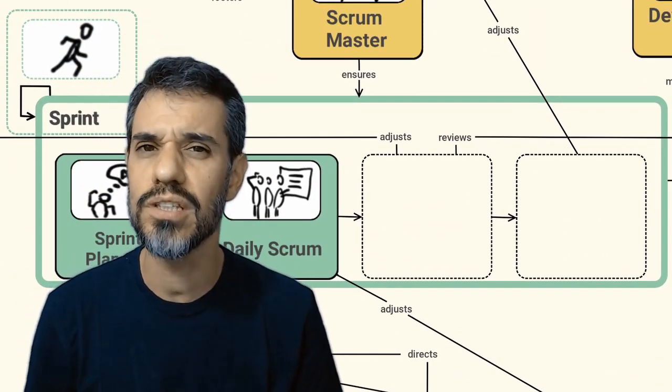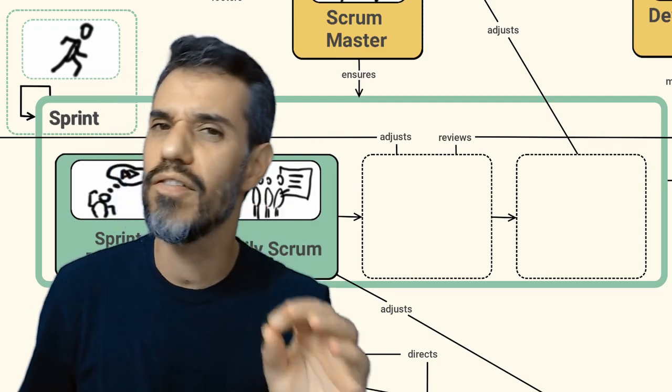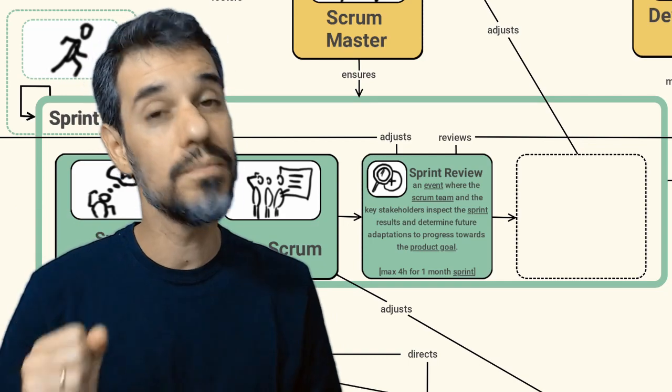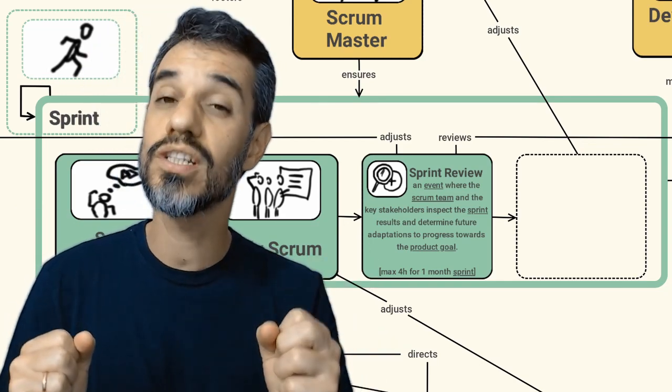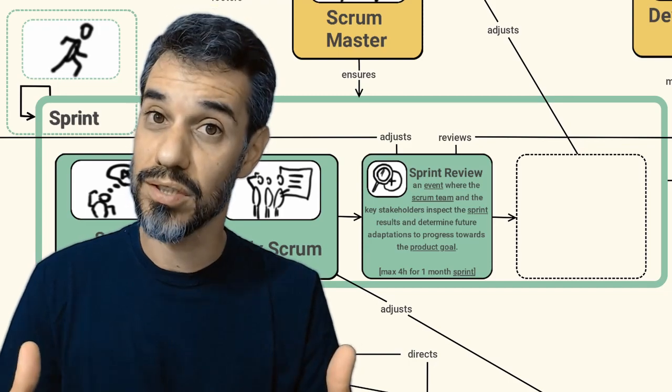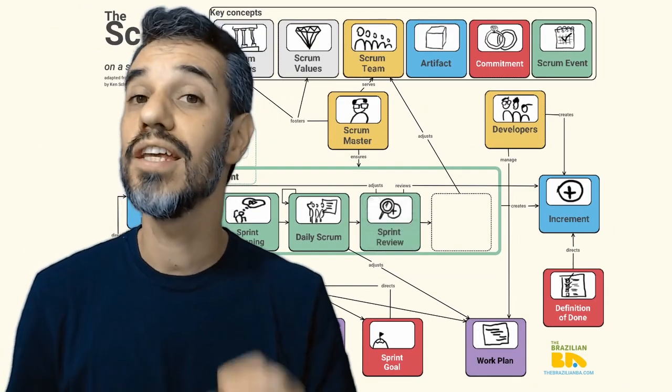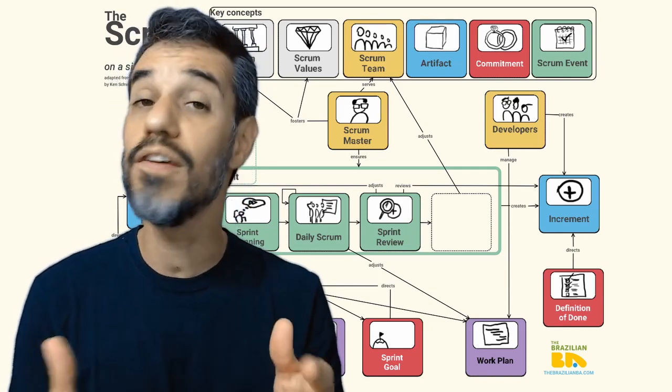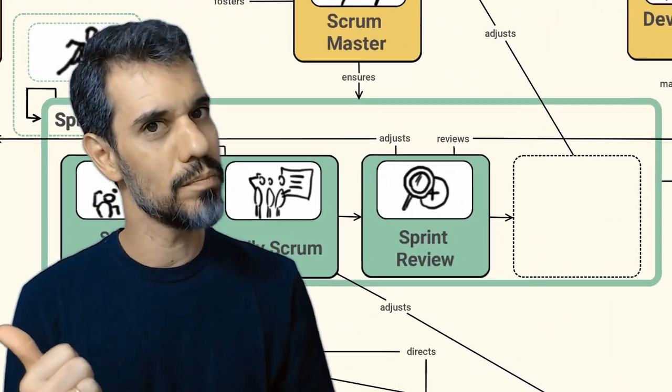At the end of our sprint there are two different events that's going to happen. The first of them is the sprint review, where the Scrum team calls some key stakeholders and presents the increment of the product. They can do an inspection in the sprint outcomes or the sprint results and make some adjustments if necessary to the product backlog.